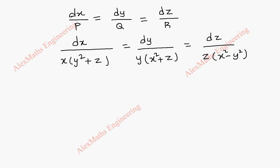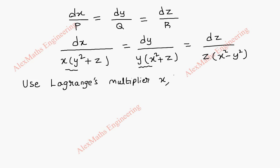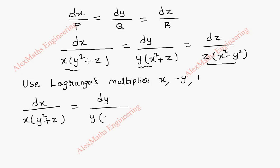Now we have to use the appropriate Lagrange's multiplier to get the solution. I'm going to use Lagrange's multipliers as x for the first term. For the second one, since we have x·y² and x²·y, it will be better if we take minus y so that the terms get cancelled. For the last one, I'll take minus one.